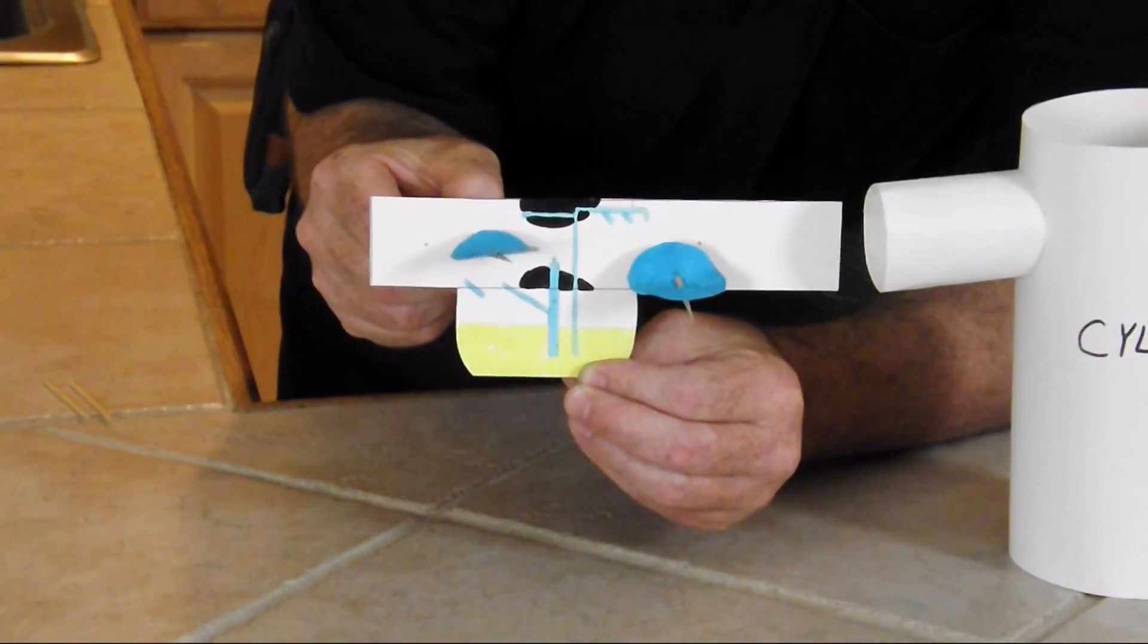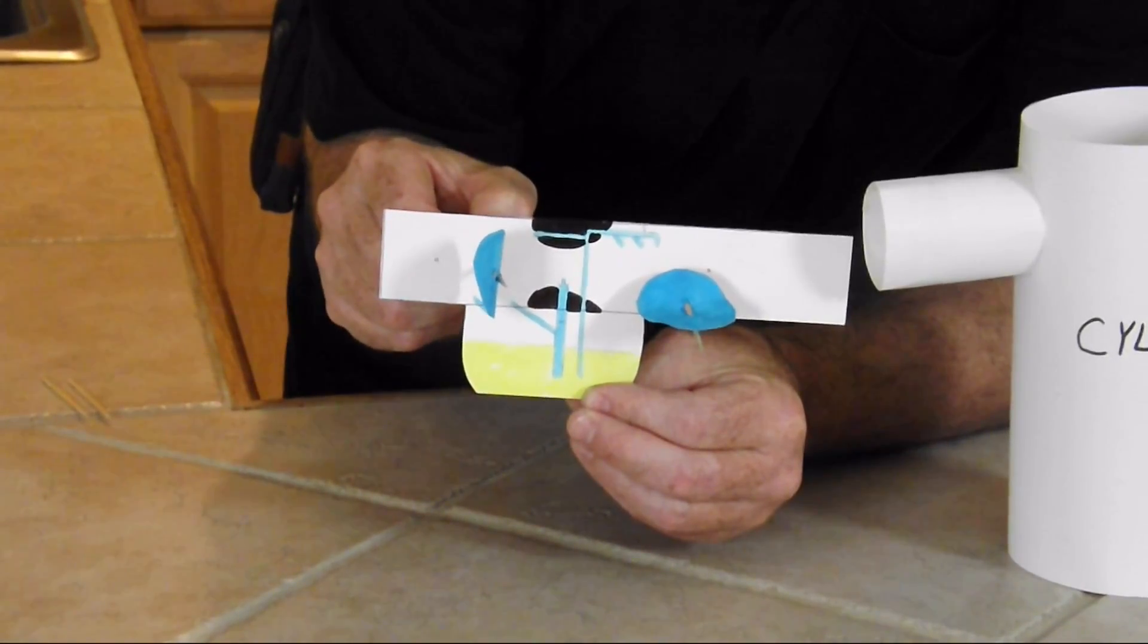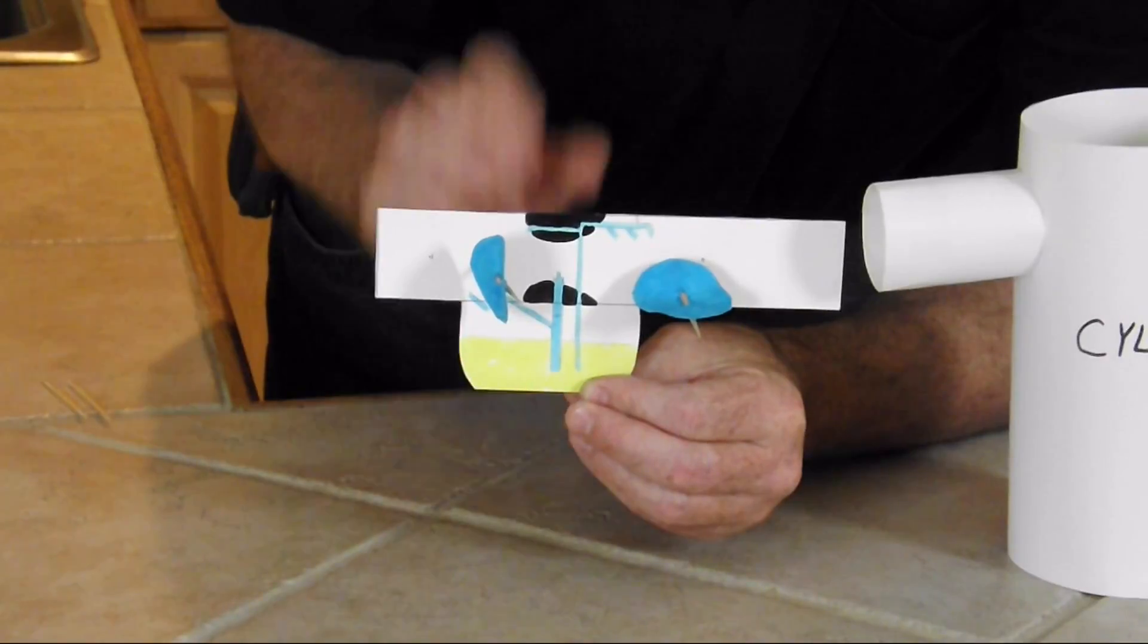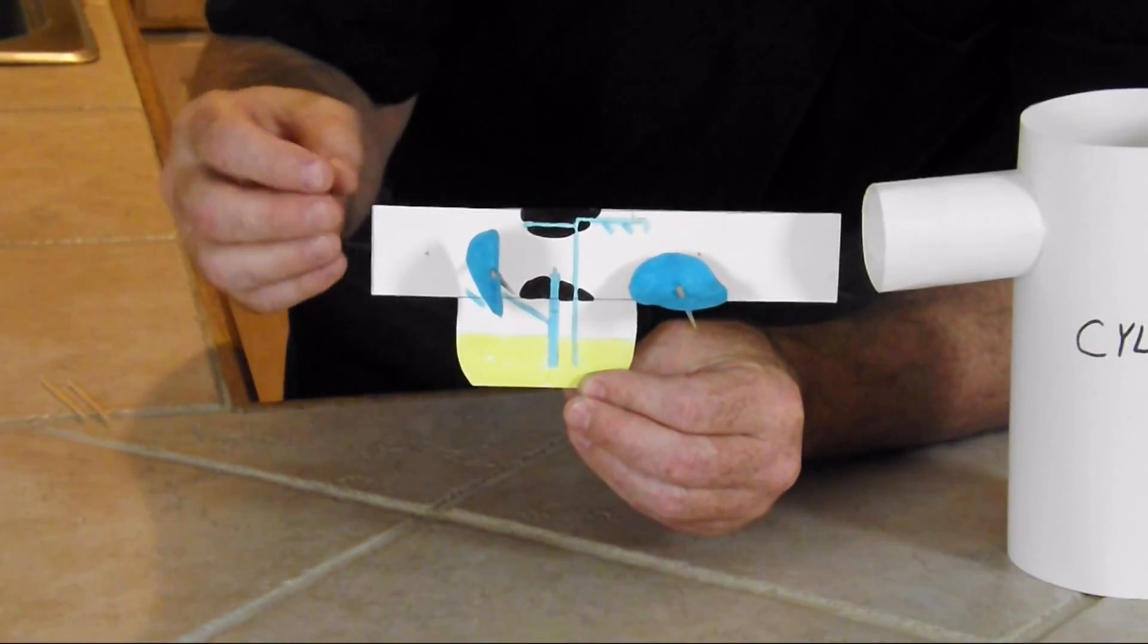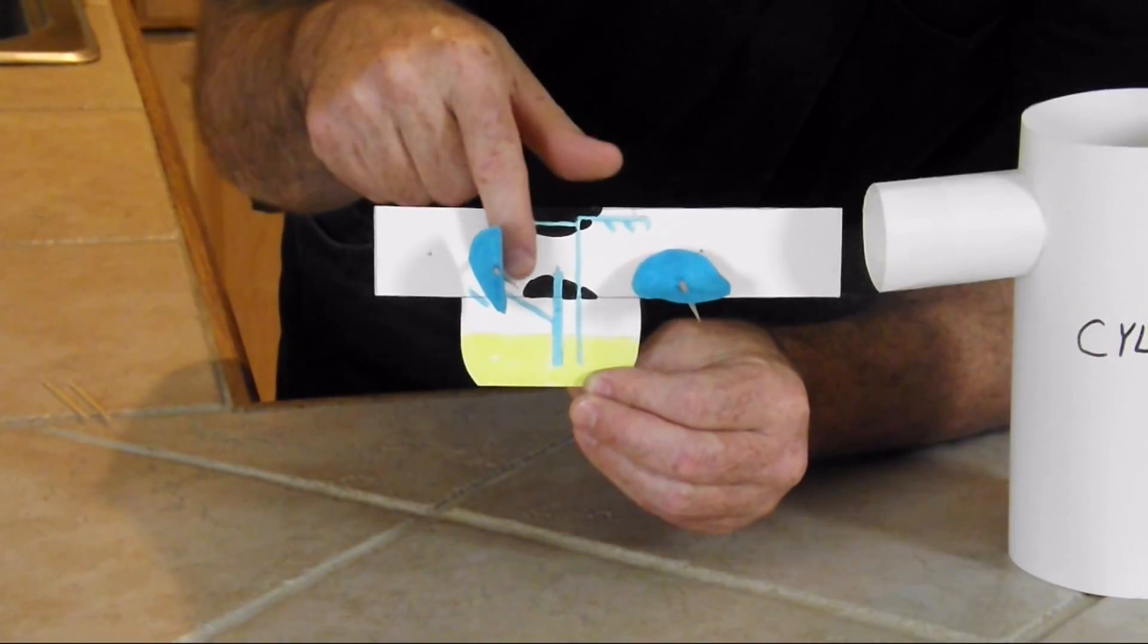And that's called a choke plate. What we're going to do is we're going to close off the, or choke the carburetor, meaning we're not going to allow as much air into the carburetor as we are fuel.